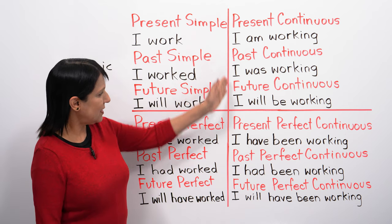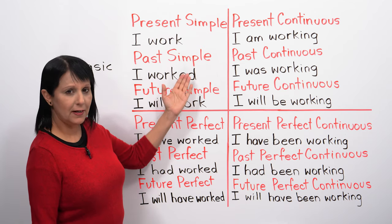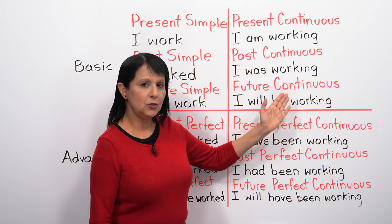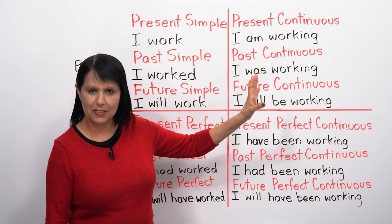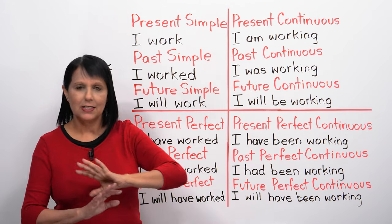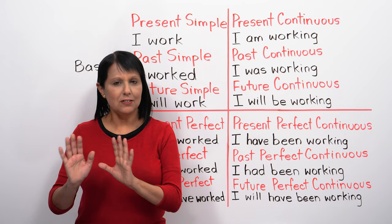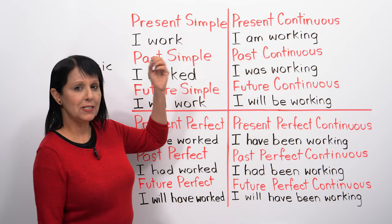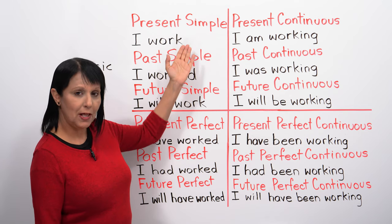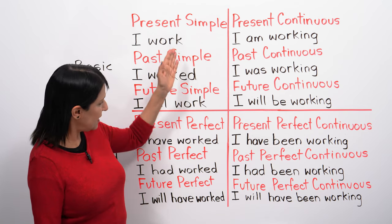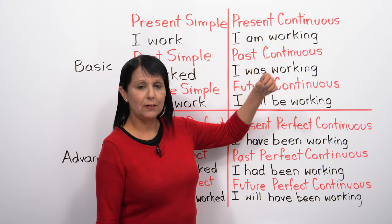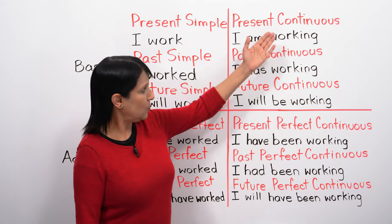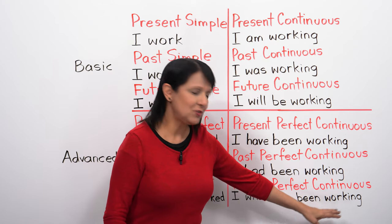On this side we see simple tenses, and on this side we see continuous tenses, which are sometimes called progressive tenses. All those names — simple, continuous — don't matter right now, because when you get to that tense, you'll understand it. What is important, though, is that many of the patterns and rules you learn here will help you throughout these tenses, including grammar, pronunciation, and spelling, all the way through to the most advanced tense.